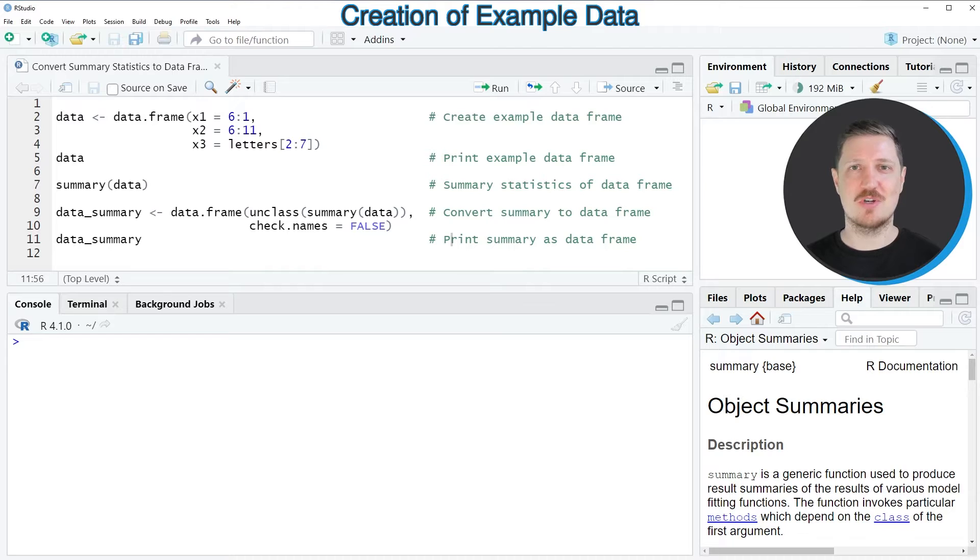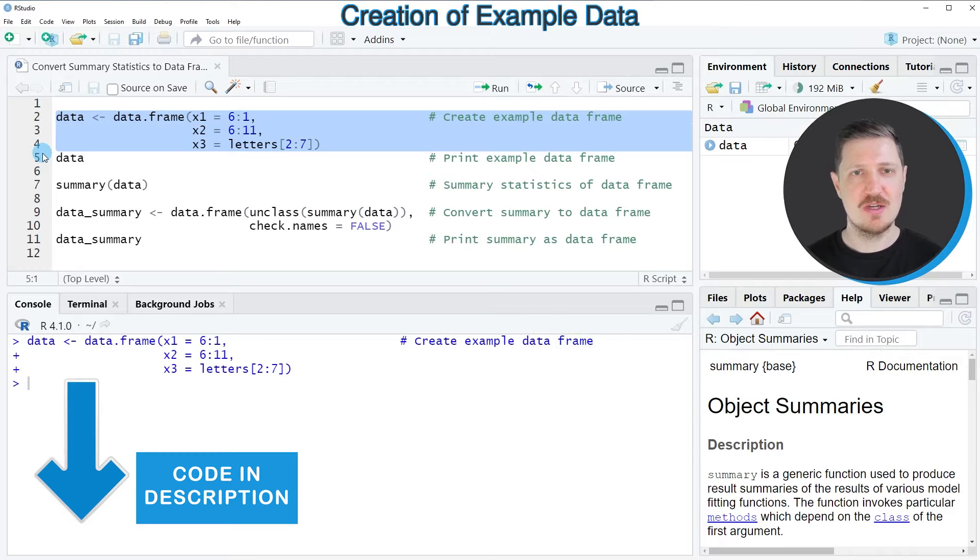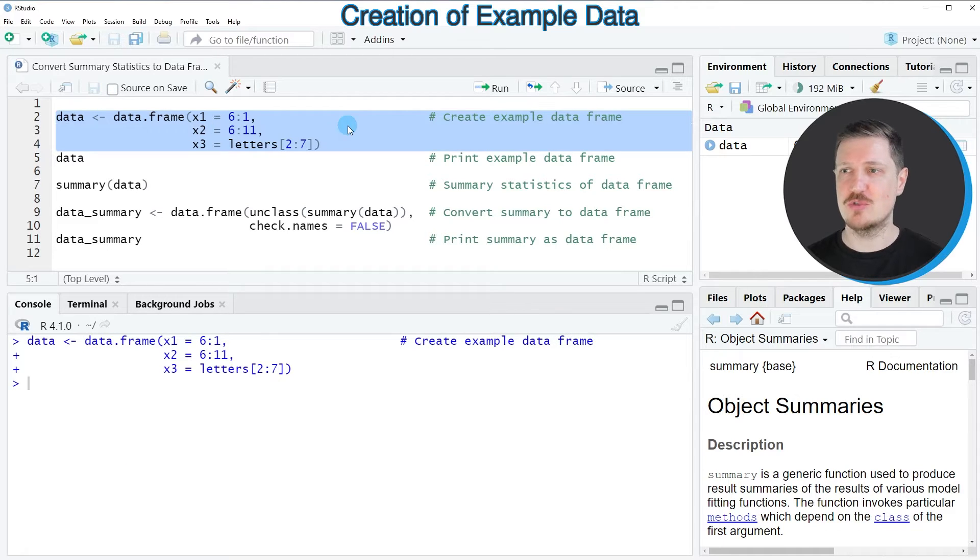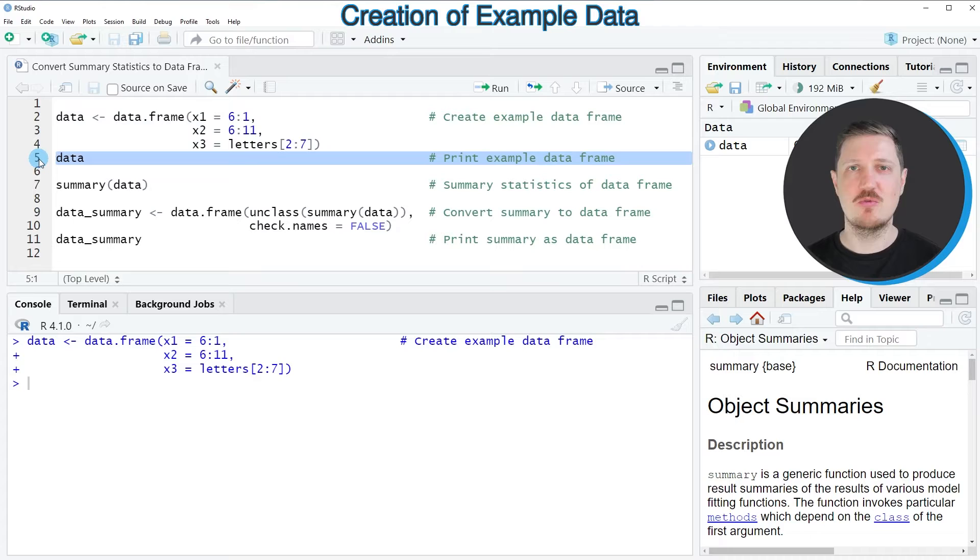In this video I will show you an example, and for this example we first need to create a data frame as you can see in lines 2 to 4 of the code. After running these lines of code, a new data frame object is appearing at the top right, which is called data. We can print this data frame to the bottom in the RStudio console by running line 5 of the code.